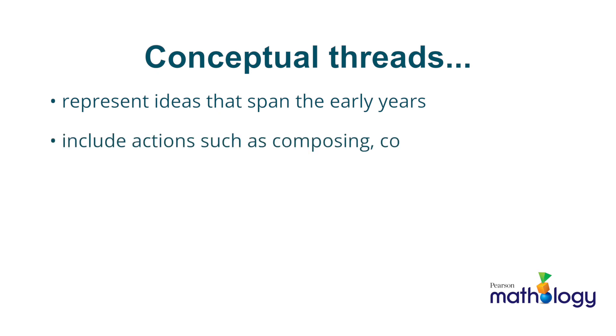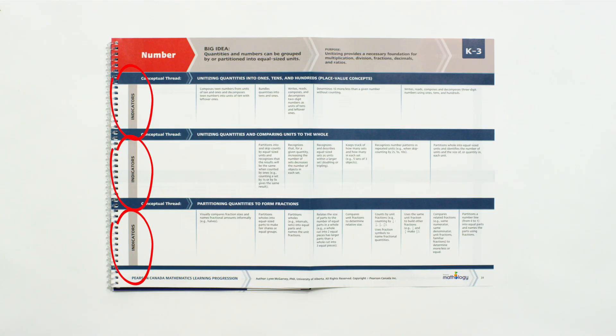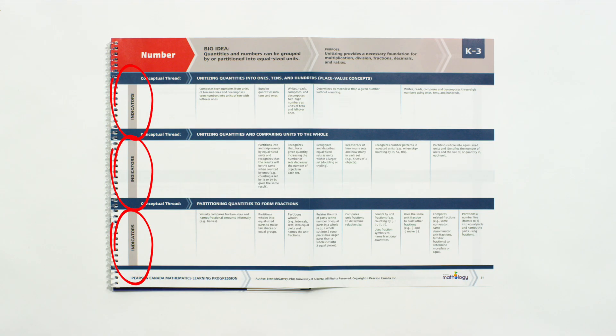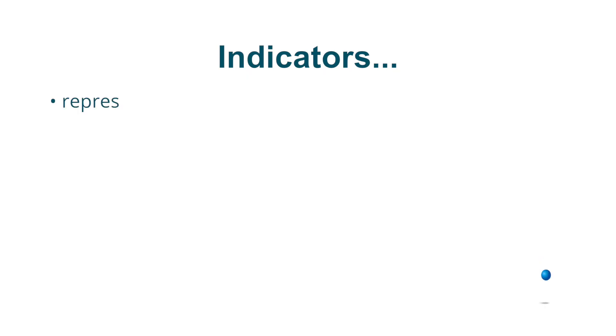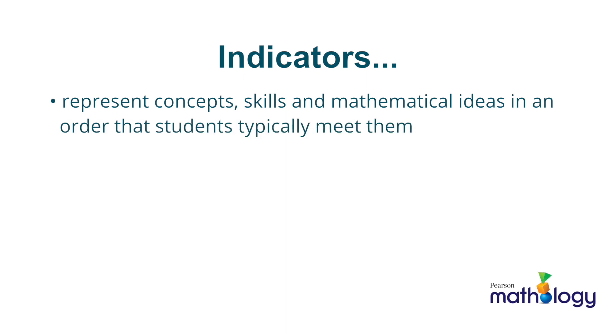You'll see actions such as composing, comparing, partitioning, estimating, and classifying, but there's other actions as well. The conceptual threads link the indicators that are outlined next. It's here, the indicators, where you'll likely focus the most. Indicators represent concepts, skills, and mathematical ideas in an order that most students encounter. Looking at how the indicators are arranged allows you to see how concepts grow over time and in complexity.